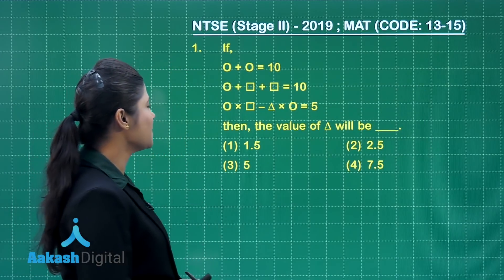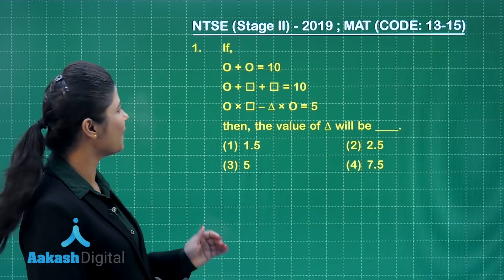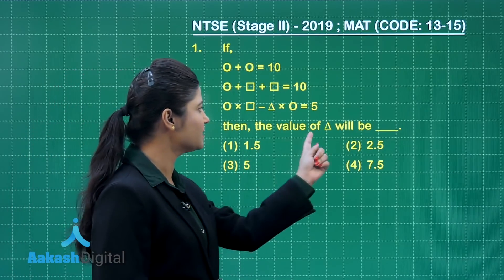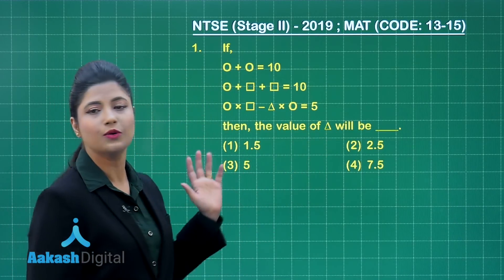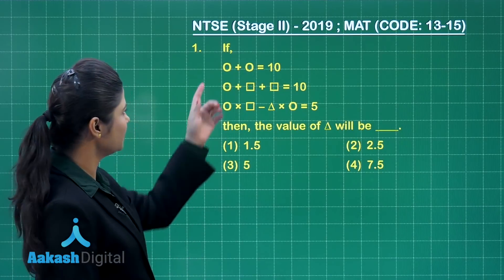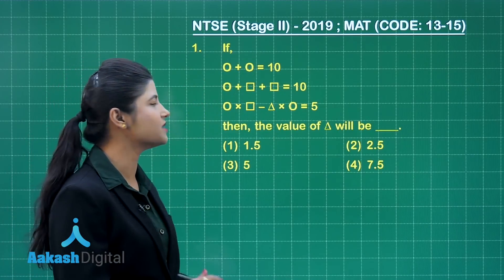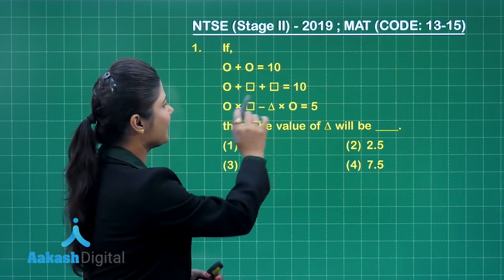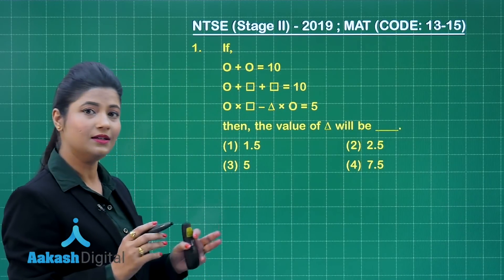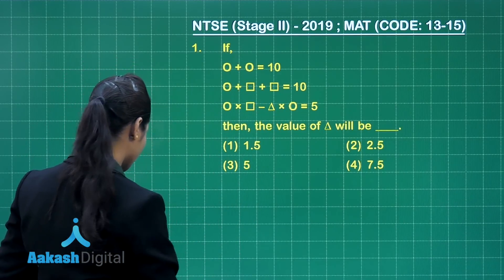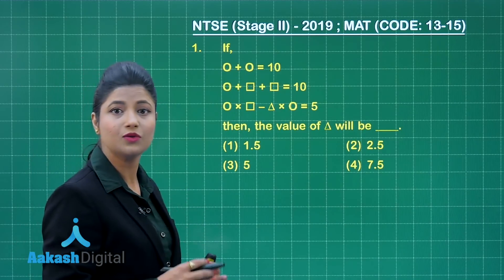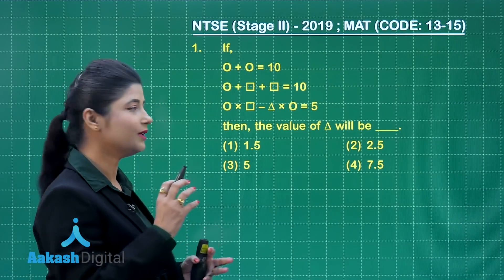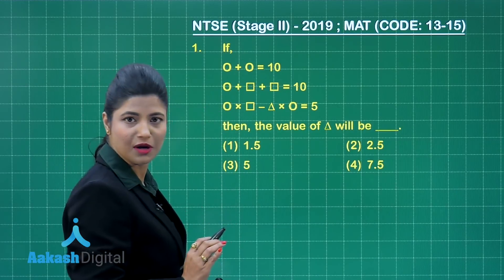This is a very interesting question. It states that if you are provided with these three equations, then the value of the triangular symbol will be one of these four options. In these three equations, symbols like the circle, square, and triangle are being used. If I consider these as variables, it will be easier to obtain the value of the triangle, as these symbols represent certain numbers.